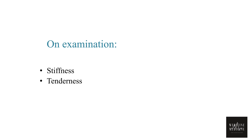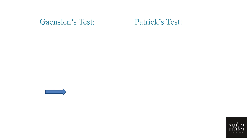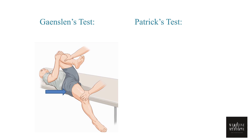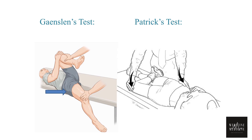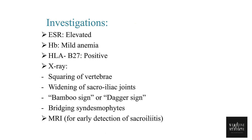On examination there is stiffness and tenderness in the involved joints. Since the sacroiliac joint is most commonly involved, two key tests are used. Gaenslen's test: the contralateral hip and knee are flexed to fix the pelvis, and the ipsilateral hip is hyperextended over the edge of the table, exerting rotational strain on the sacroiliac joint. Patrick's (FABER) test — Flexion, Abduction, and External Rotation — provokes pain in the involved joint.